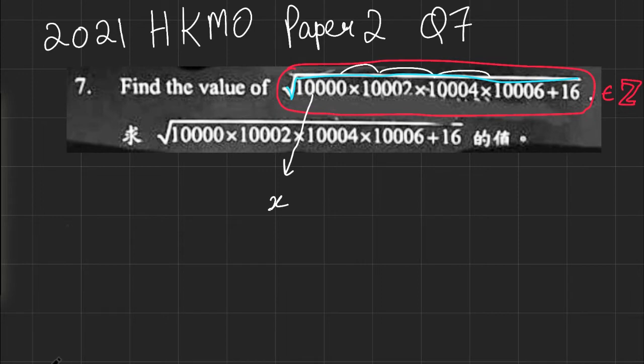Notice that there's a square root here, so that gives us motivation that this expression right here is perhaps a square. If I do substitute 10,000 as x, I get x times (x+2) times (x+4) times (x+6) plus 16. Well, you can't really factor this as a square because it's got a lot of cubic and single degree terms. Obviously we can't have those in squares, the odd degree terms.